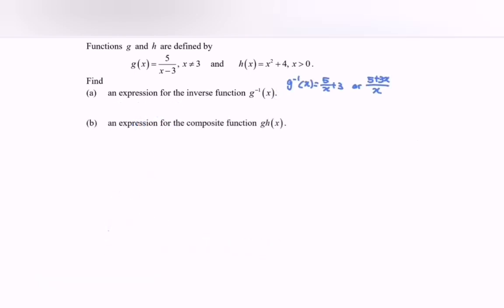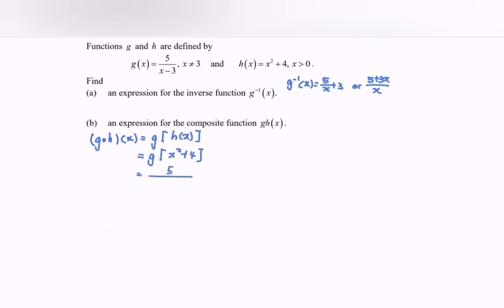Part (b): find an expression for the composite function g∘h. We have g(h(x)). Substituting h(x), we get g(x² plus 4). Next, substitute into g: 5 over (x² plus 4 minus 3), which gives g∘h equals 5 over (x² plus 1). So here we have the composite function.